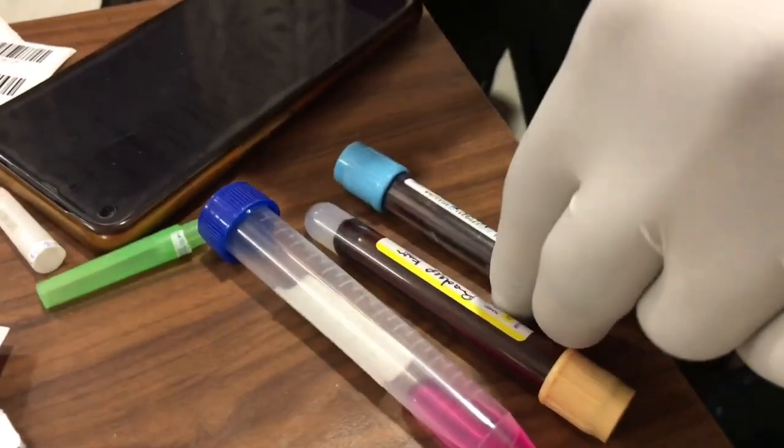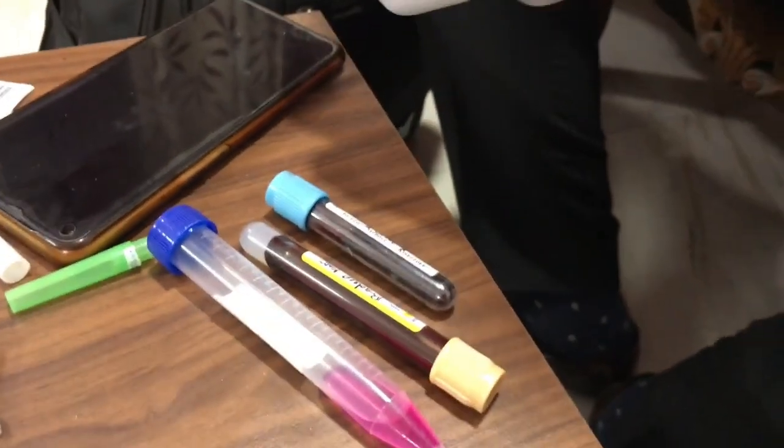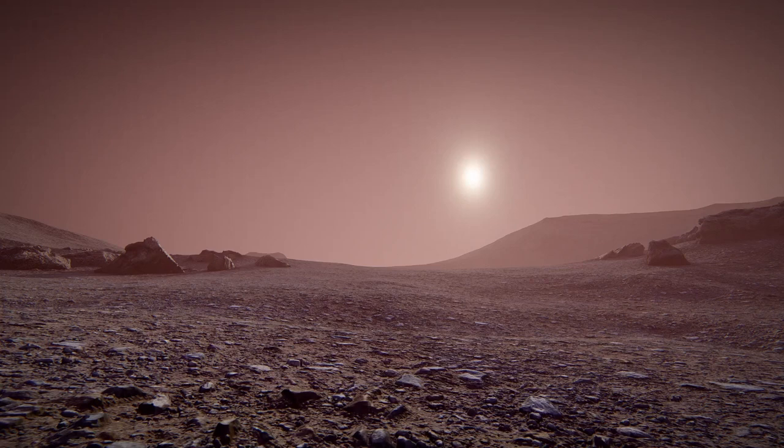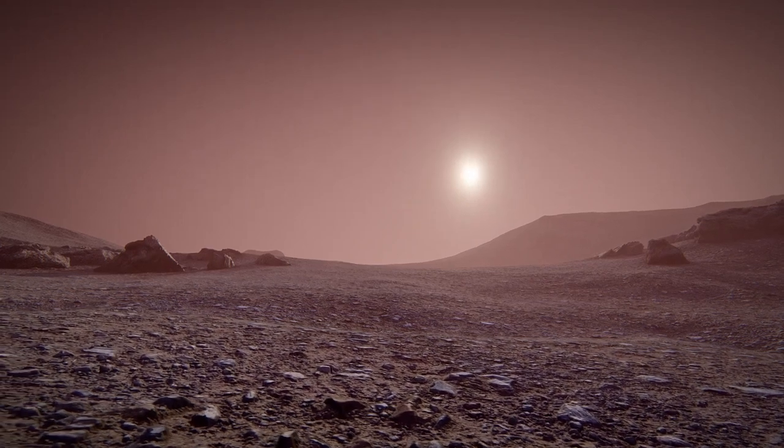This dilemma highlights a cruel irony. We're searching for life on Mars while also trying not to introduce it ourselves. In attempting to avoid contamination, NASA follows a principle of planetary protection: better to delay a discovery than to damage or erase evidence of native life.